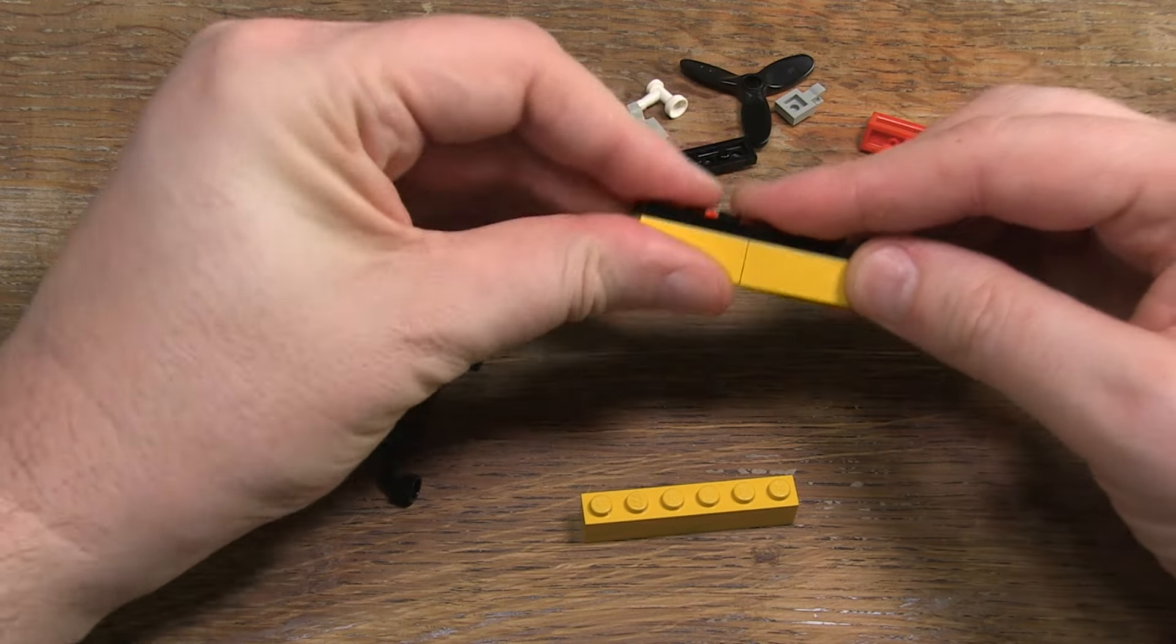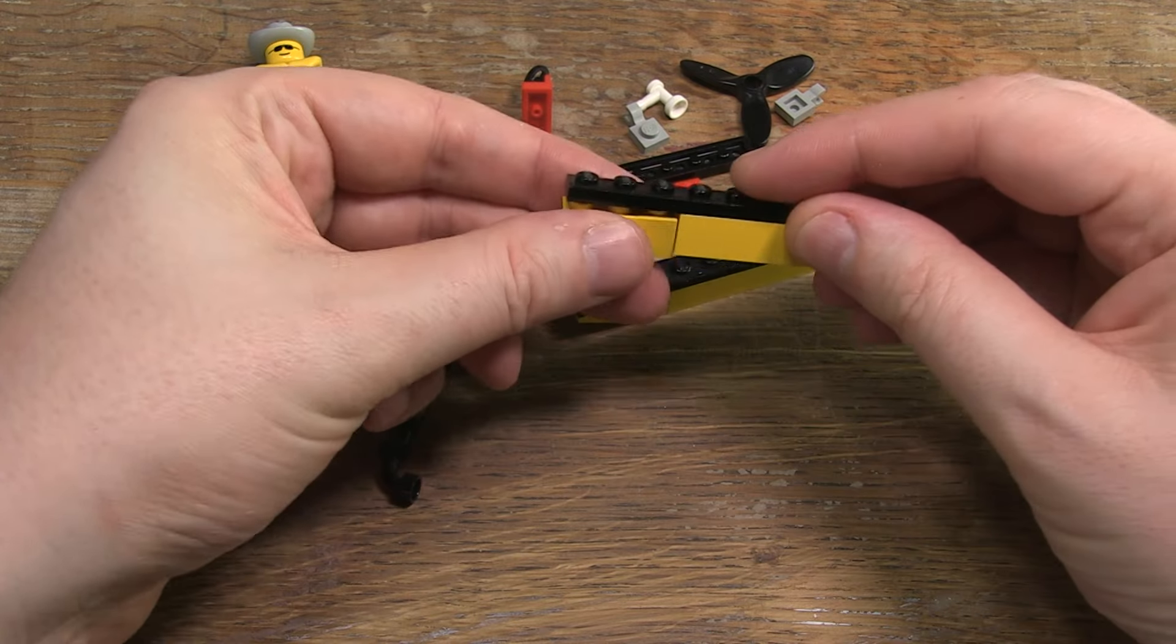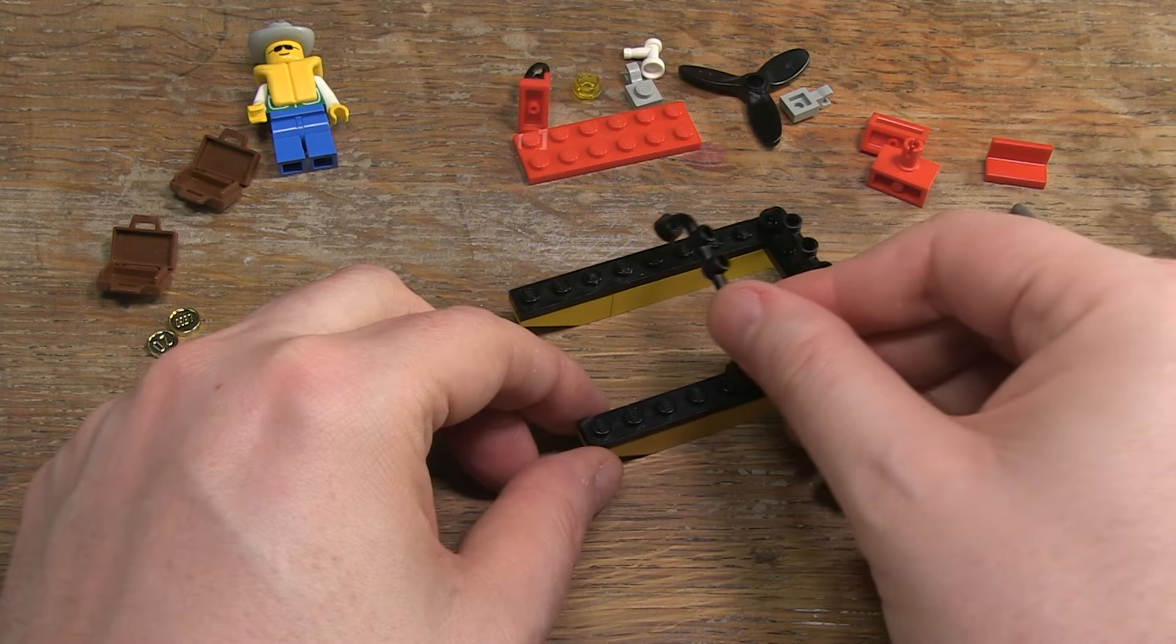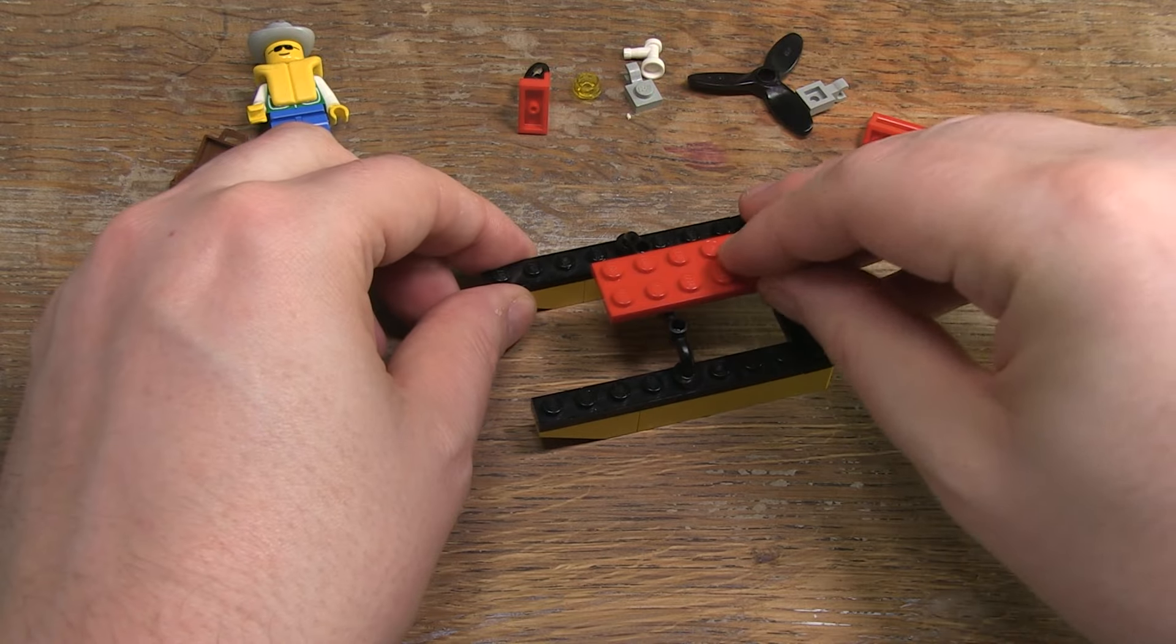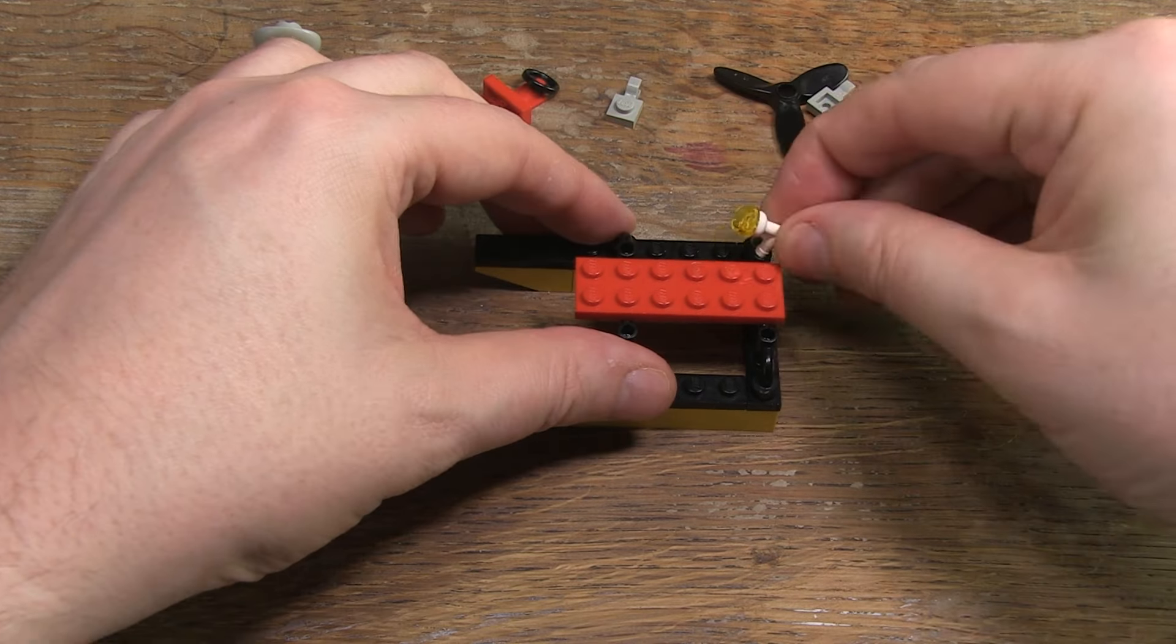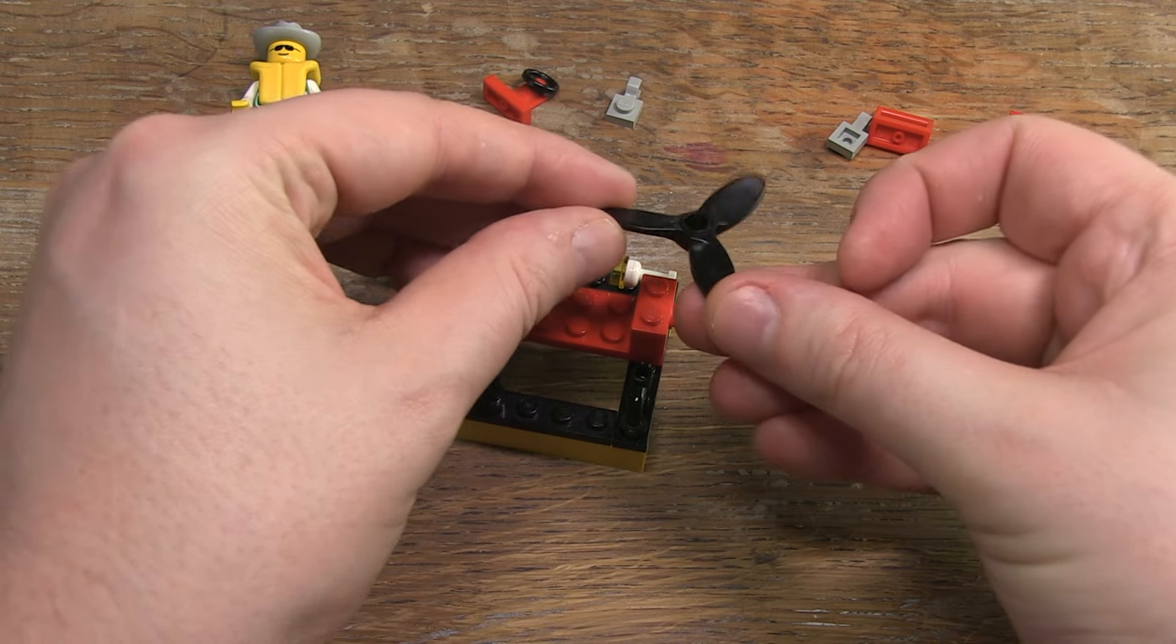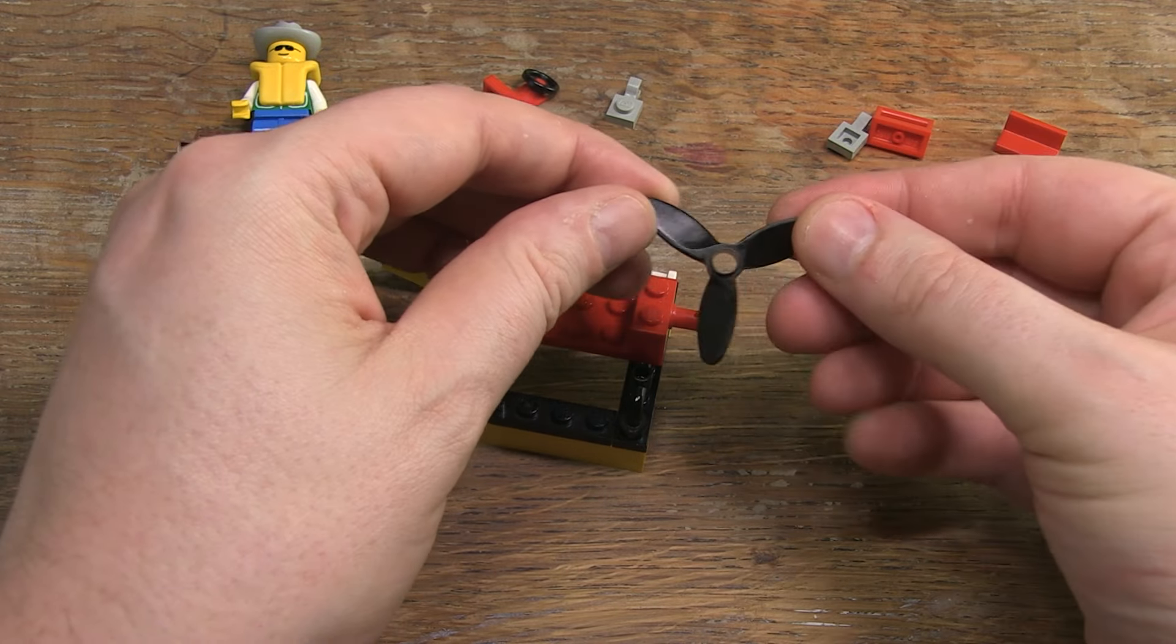So let's build the set. First the hovercraft. It only consists of a few parts, but they are well chosen, supplemented with nice accessories and details. The big screw is cool. I haven't seen that part much yet.